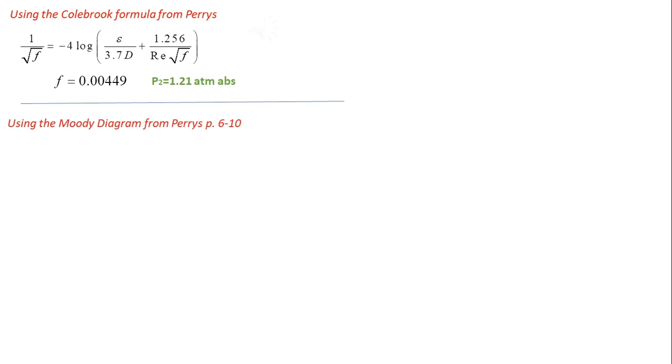Now, I just want to emphasize how friction factor values affects our exit pressure. If we use Colebrook formula, we will have f equals to 0.00449 and exit pressure equals to 1.21 atmospheres.